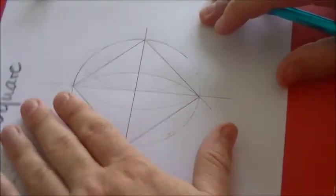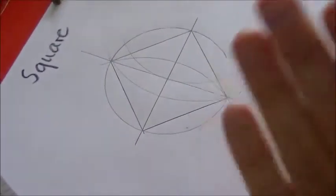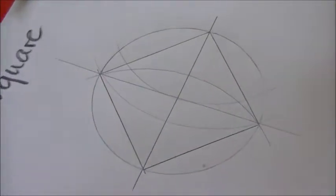And there is our square—a nice perfect square without measuring or a protractor or anything.